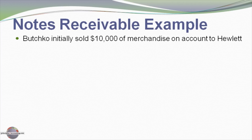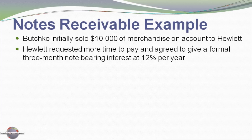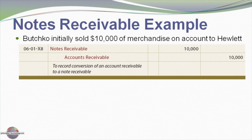Assume $10,000 of merchandise is sold on account to Hewlett. Hewlett requests more time to pay and agrees to give a formal three-month note bearing interest at 12% per year. At the time the account receivable is exchanged for the note receivable, we debit notes receivable and credit accounts receivable $10,000, which increases the note receivable asset and removes the accounts receivable from the books.